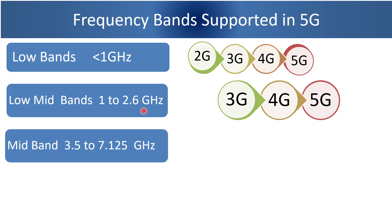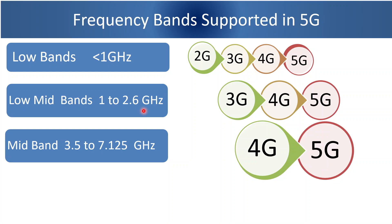Mid band frequencies are from 3.5 GHz to 7.125 GHz. At present, 4G systems are operating on these bands. 5G also supports these bands.